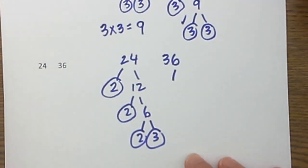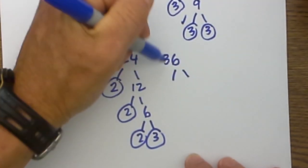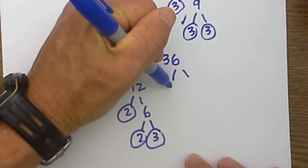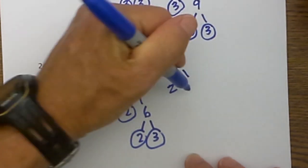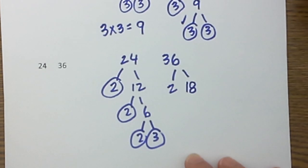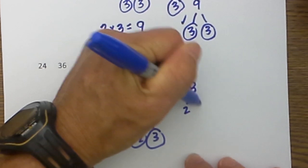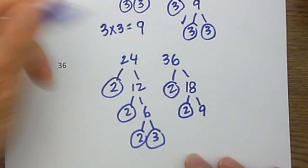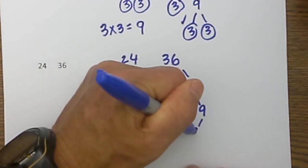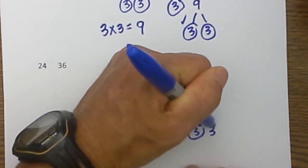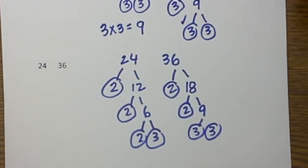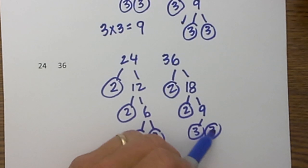Now for 36, I will just factor with 2s again. 2 will go into 36. 2 times 18 is equal to 36. I will circle the 2 because it is a prime number. Then 2 goes into 18. 2 times 9, I will circle the 2. And then 3 times 3 is equal to 9, and so I am finished factoring 9 because I have two prime numbers.